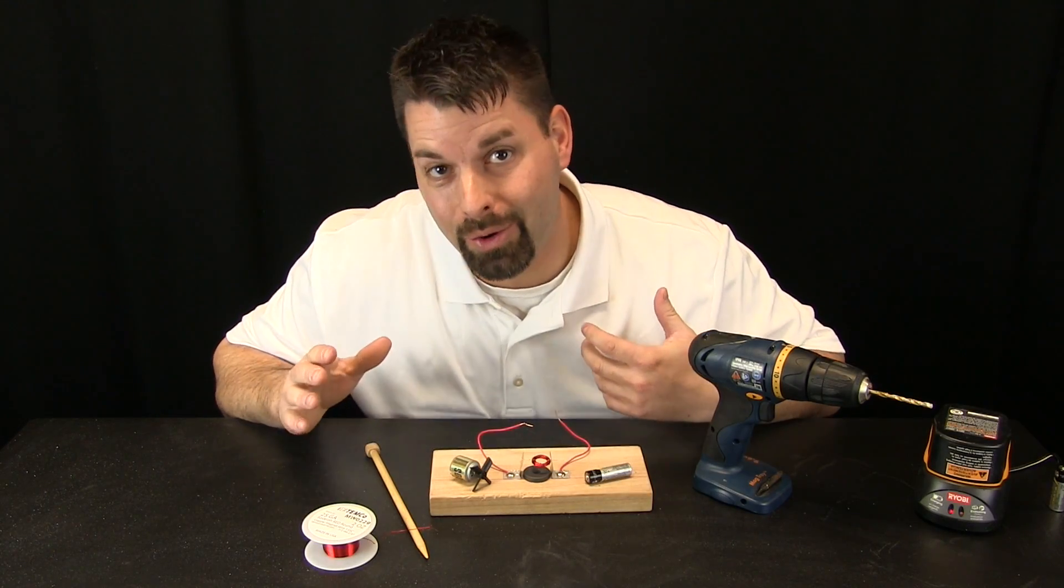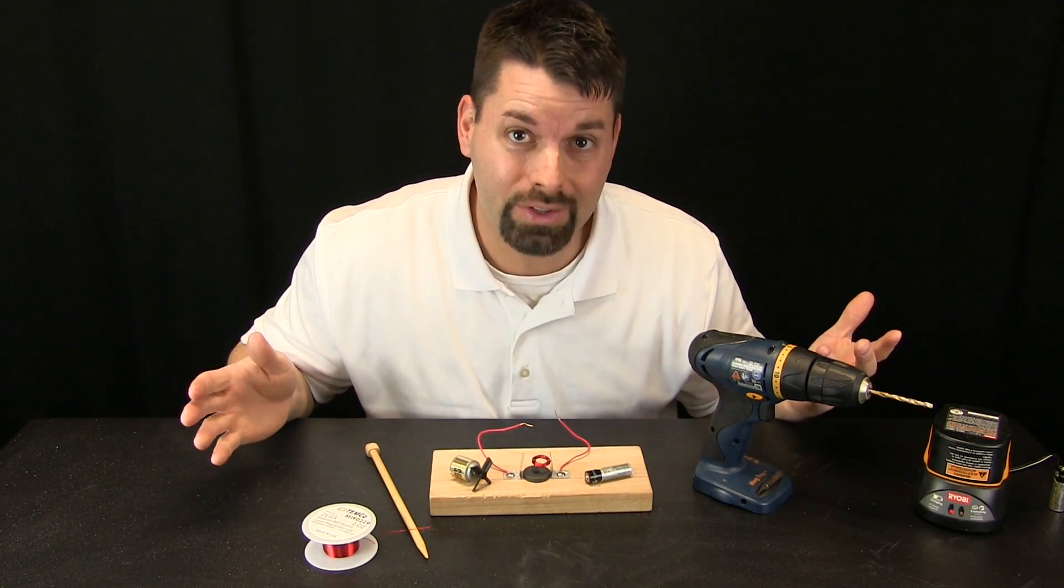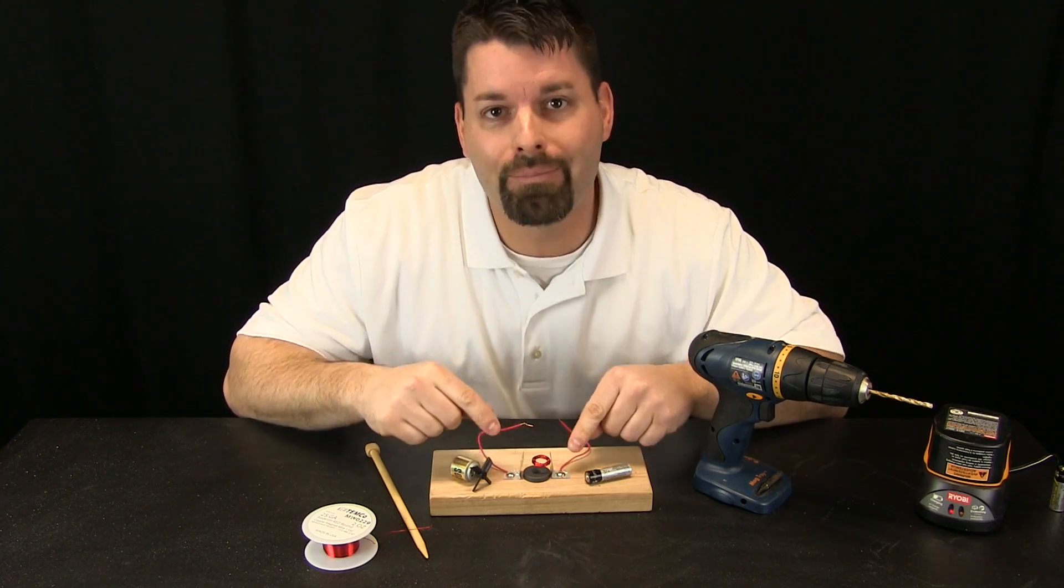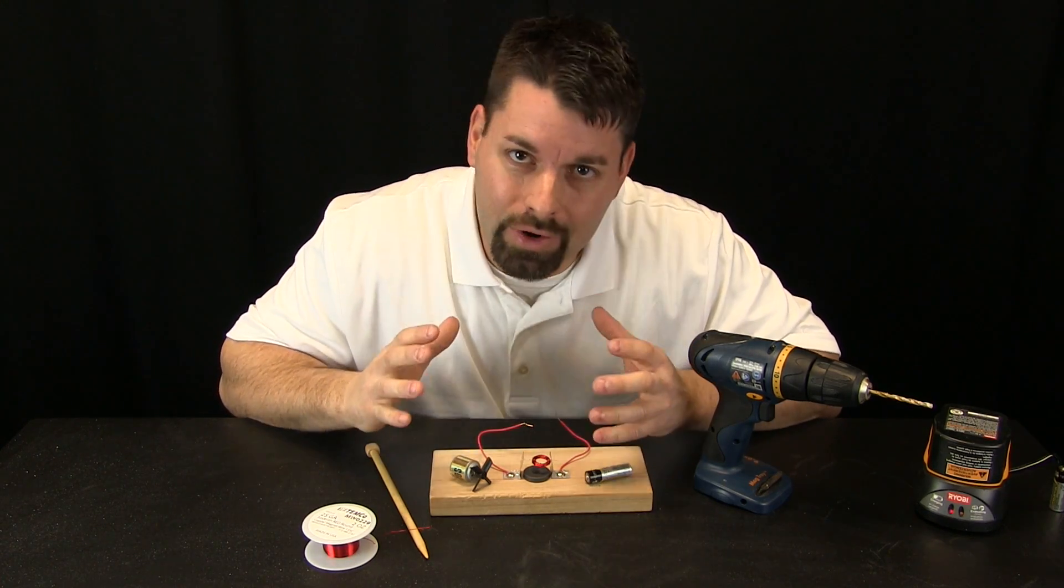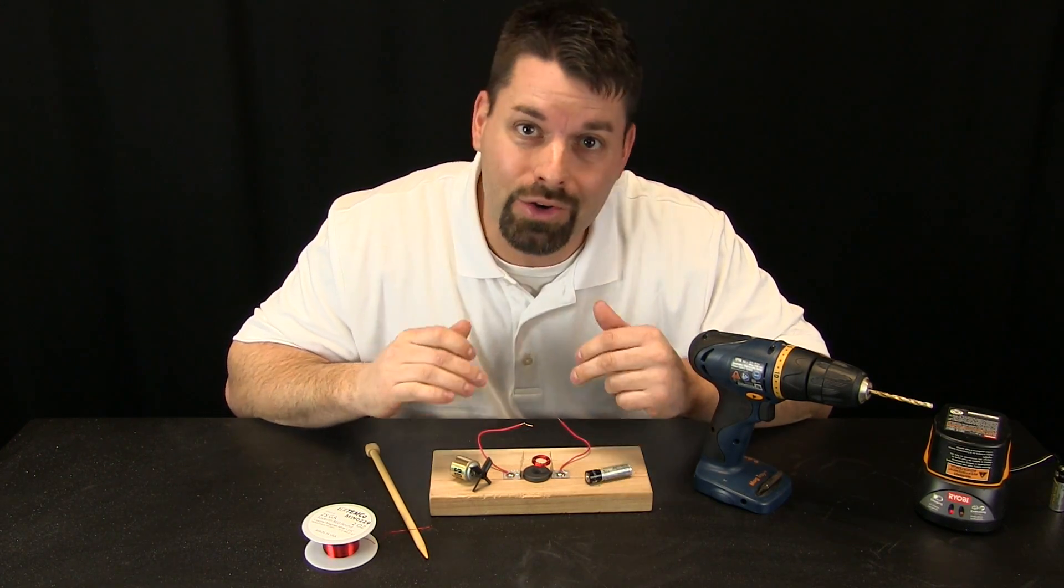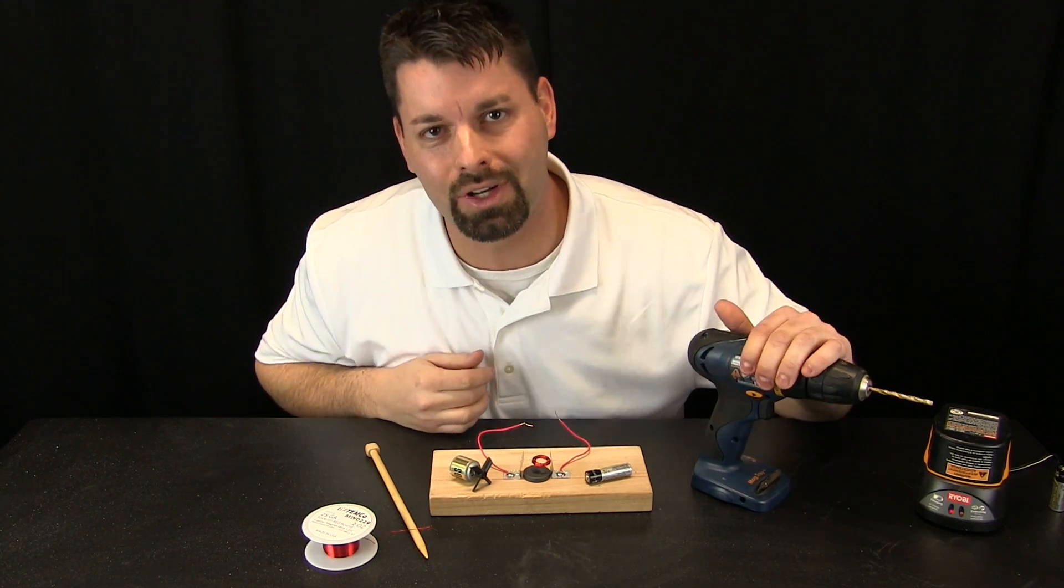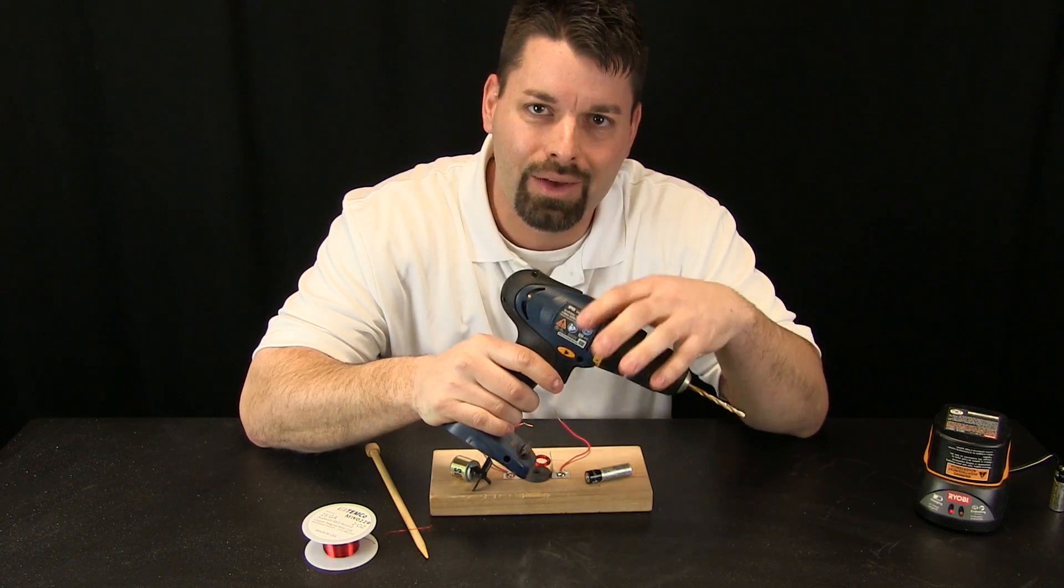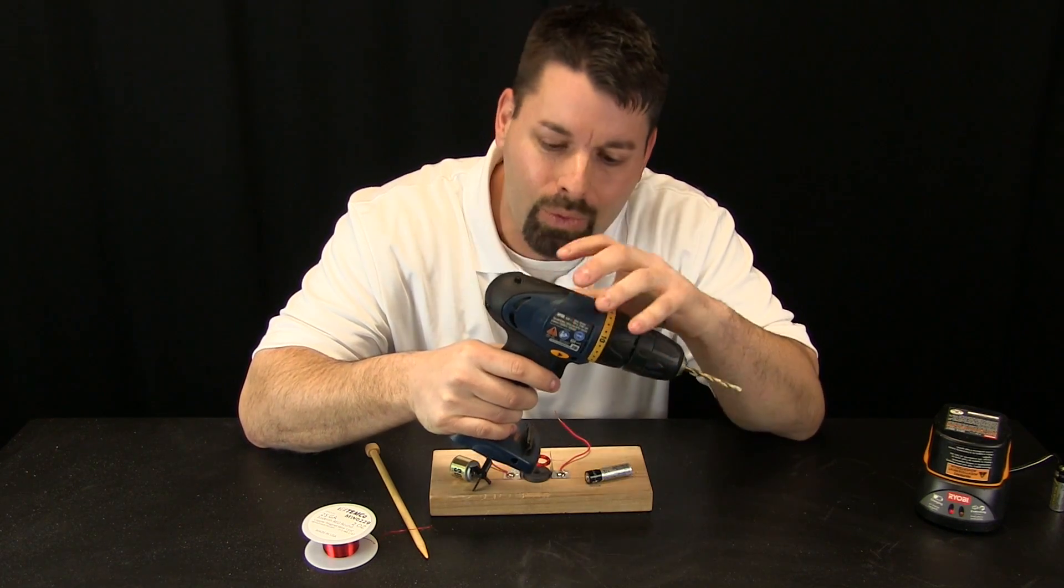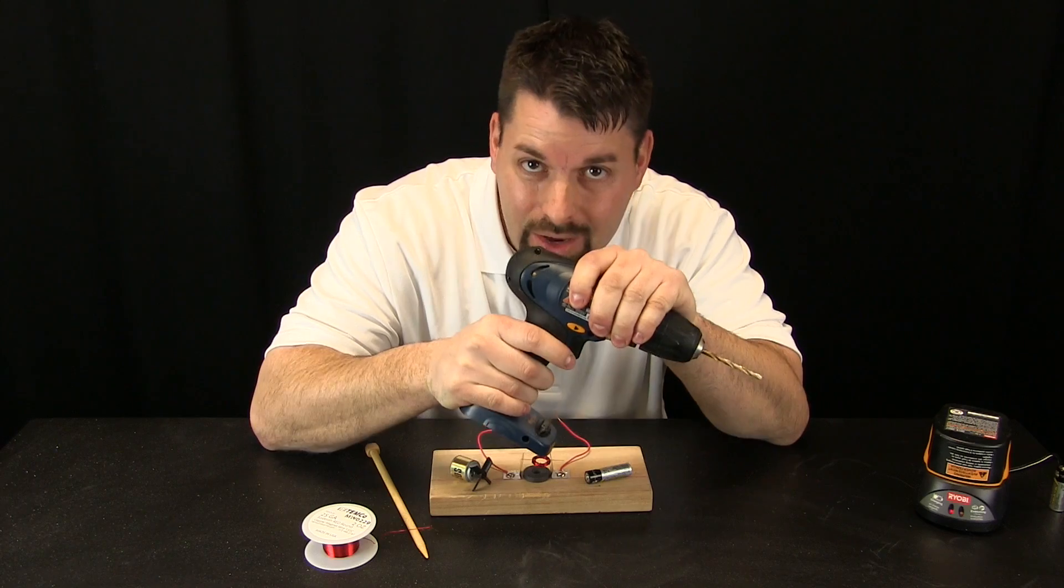We use electric motors really all over in so many different places. But remember, that motor is usually covered up so you cannot see the copper wire and you cannot see the magnets. This drill actually uses an electric motor. If you pick it up it is a little bit heavy. Why? It is all those magnets and copper wire. You cannot see it because it is covered up.